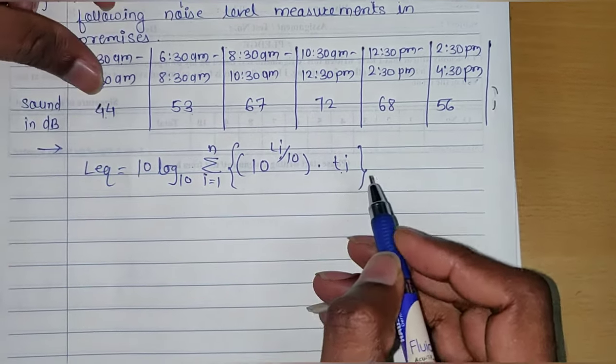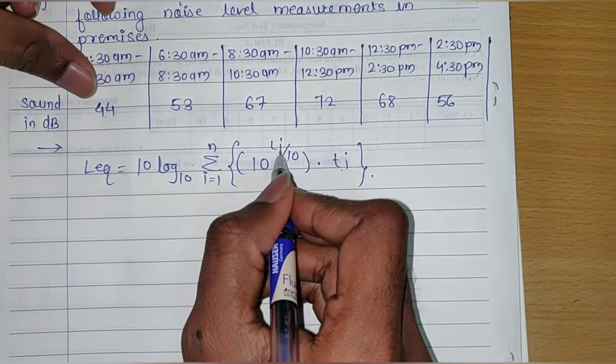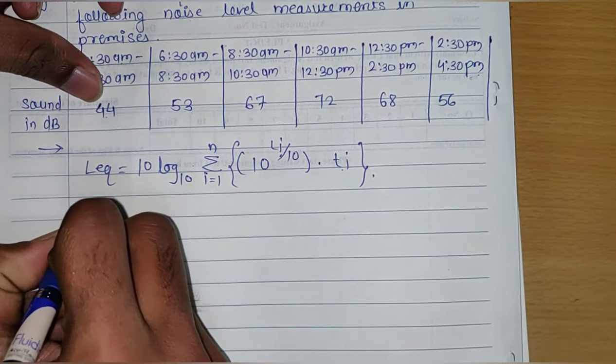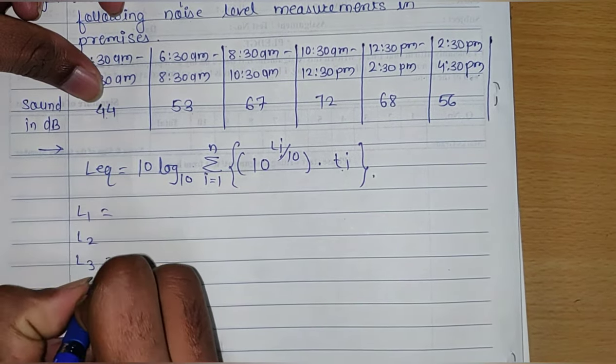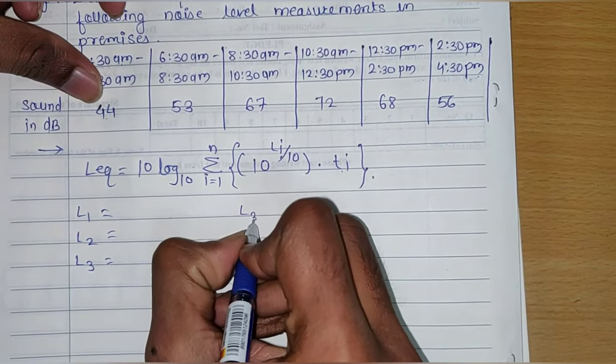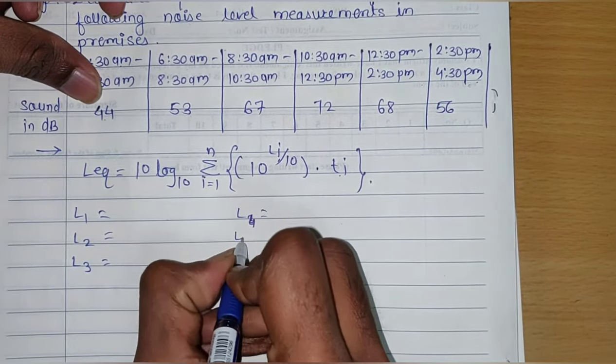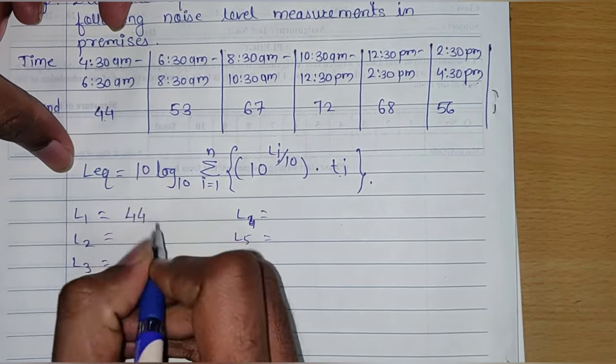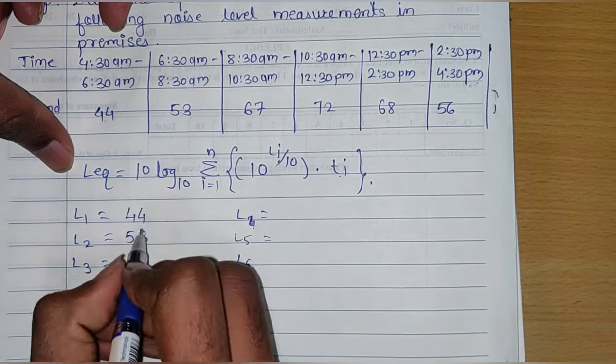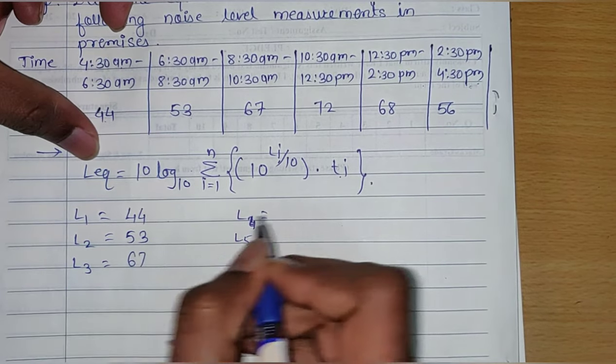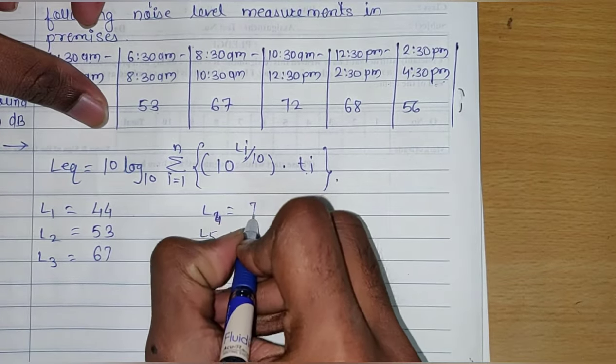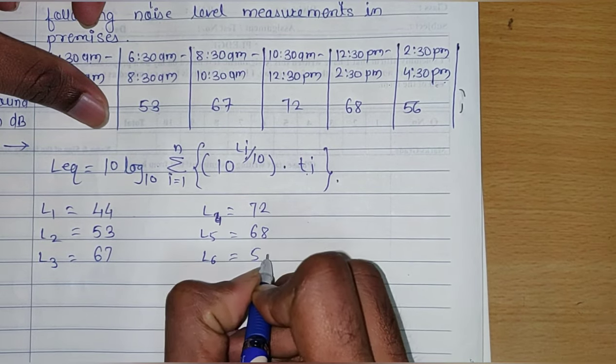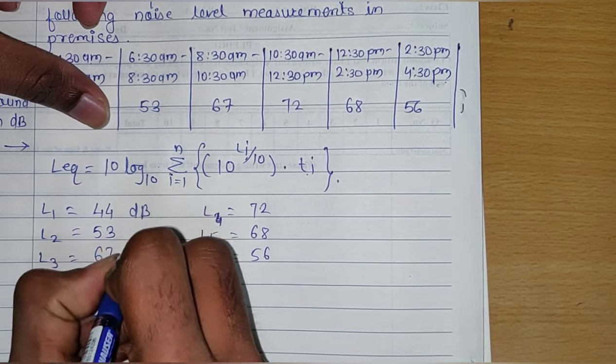L_1, L_2, L_3, L_4, L_5, and L_6. L_1 value is 44 dB, L_2 is 53 dB, L_3 is 67 dB, L_4 is 72 dB, L_5 is 68 dB, L_6 is 56 dB. All these values are in decibels.